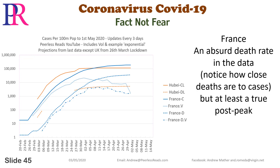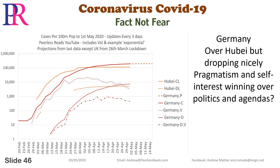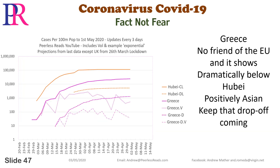France: an absurd death rate in the data — notice how close deaths are to cases — but at least a true post-peak. Germany: over Hubei but dropping nicely. Pragmatism and self-interest winning over politics and agendas. Greece: no friend of the EU, and it shows — dramatically below Hubei. Positively Asian. Keep that drop-off coming.